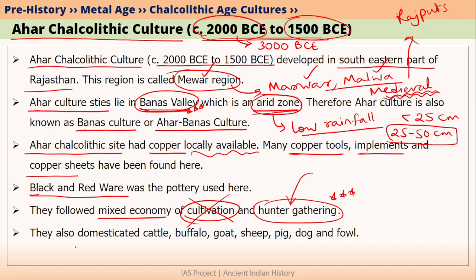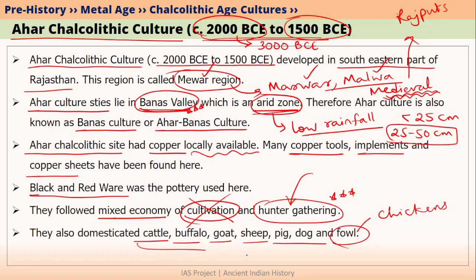If we talk about the animals reared by these people, Ahar Chalcolithic culture people domesticated cattle, buffalo, goat, sheep, pigs, dogs, and fowl — that is, chickens. So all these animals were domesticated by Ahar Chalcolithic culture people.